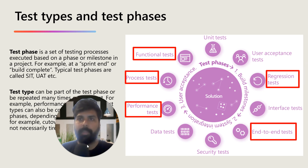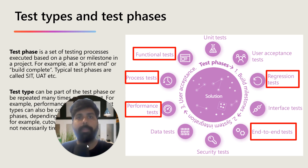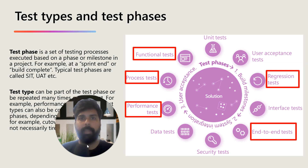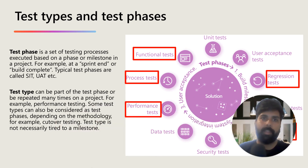That does not mean you are not involved in the rest of the test types. For example, in user acceptance testing you will be part of it and will be supporting the users, but the key stakeholders doing it will be your end users. Similarly, in unit testing, the developer will be doing the testing but you will support as well. The highlighted ones are where you are accountable and responsible to execute; in the rest you are supporting.